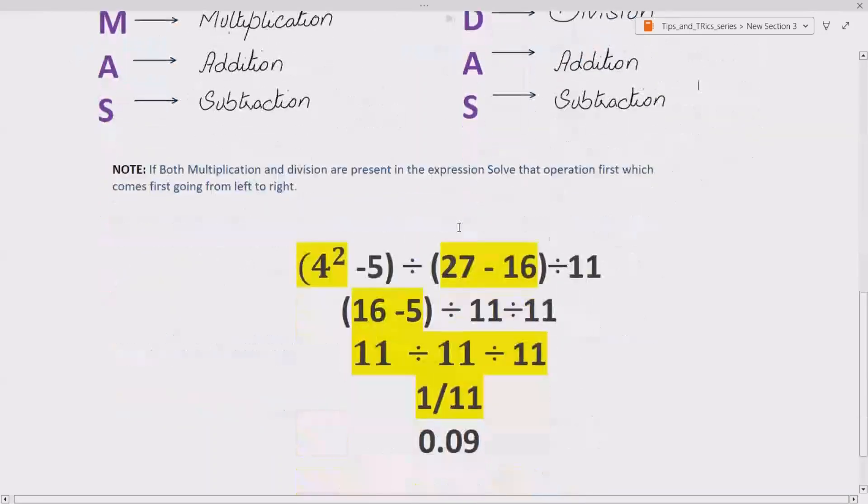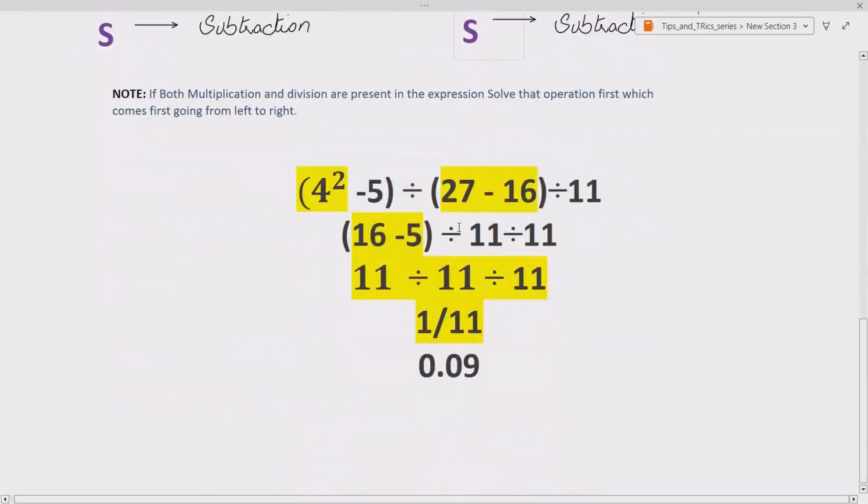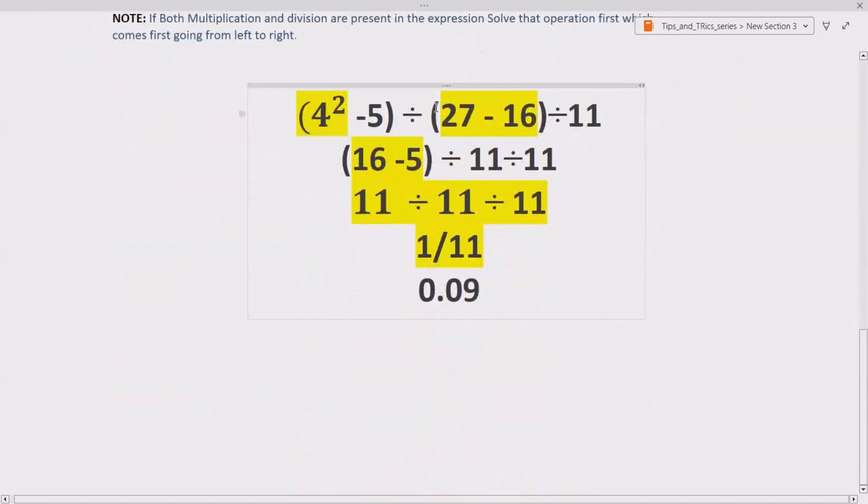Now, let's see how we can solve our question using BODMAS or PEMDAS. So, we are given 4 square minus 5 divided by 27 minus 16 divided by 11. Since we have to first solve according to BODMAS or PEMDAS the brackets, so we have to solve these brackets simultaneously. So, in the brackets, when we see, we have exponent terms.